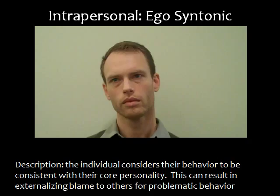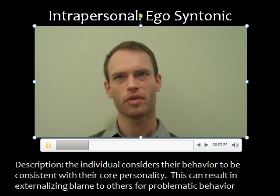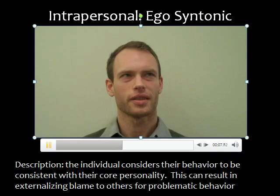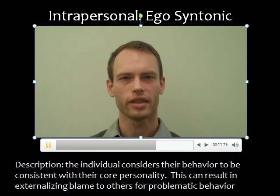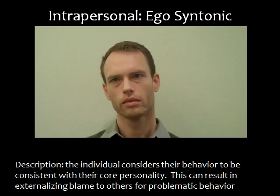Ego syntonic is described as when an individual considers their behavior to be consistent with their core personality. This can result in externalizing blame to others for problematic behavior. In the video example, the client says: "I've been drinking since I was like five. It's never been a problem. I drink something like a 12-pack a day every day. I can handle it. It's not like I act stupid when I'm drunk or anything. I don't know why everybody else has such a problem." This client smiles while describing their drinking and mentions it as something they've always done. Their behavior is ego syntonic or egocentronic.